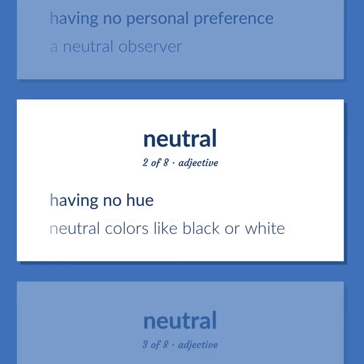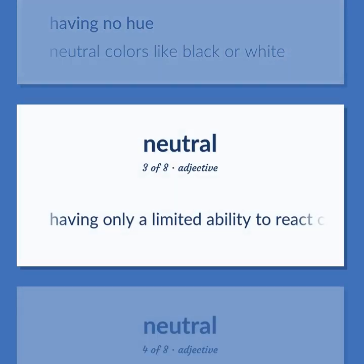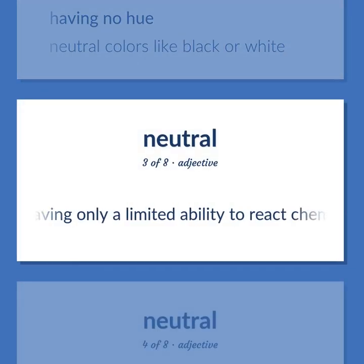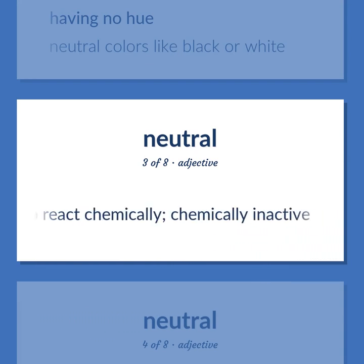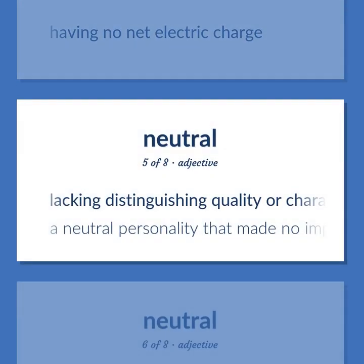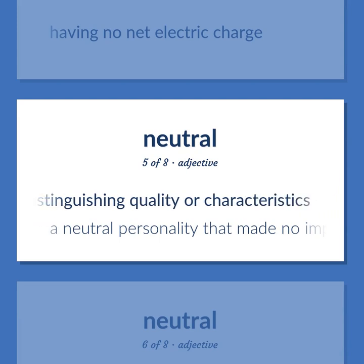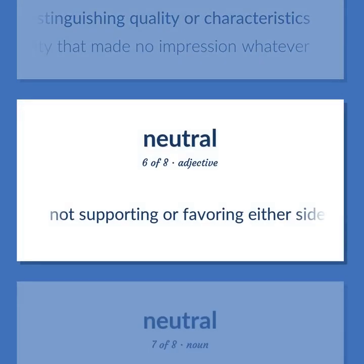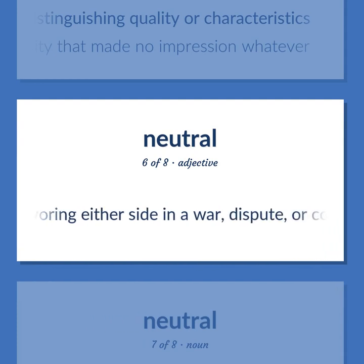Neutral: having no hue. Neutral colors like black or white. Having only a limited ability to react chemically — chemically inactive. Having no net electric charge. Lacking distinguishing quality or characteristics. A neutral personality that made no impression whatever. Not supporting or favoring either side in a war, dispute, or contest.